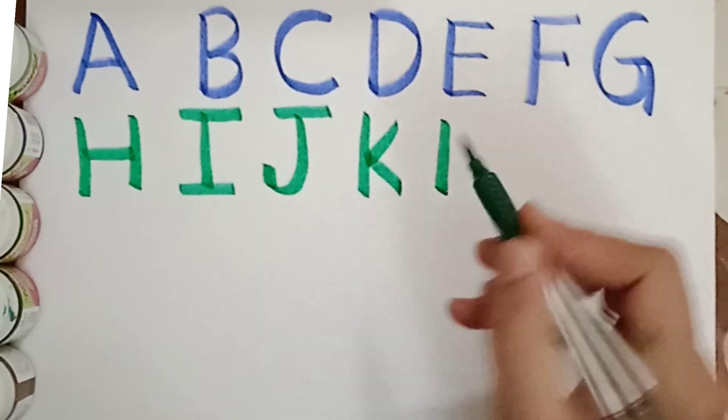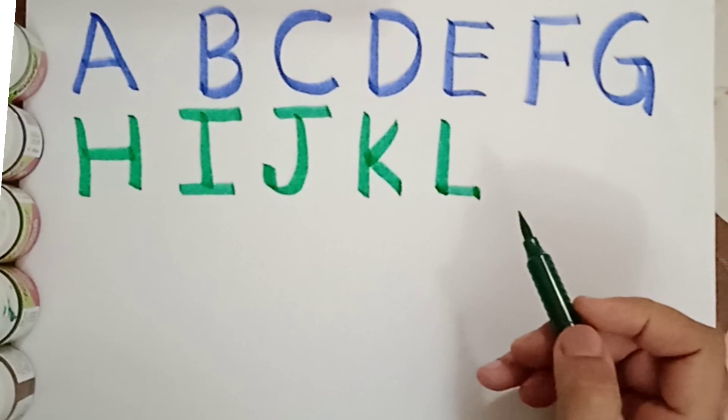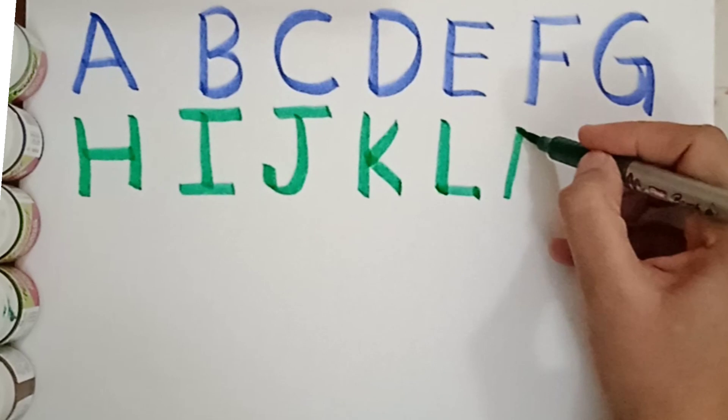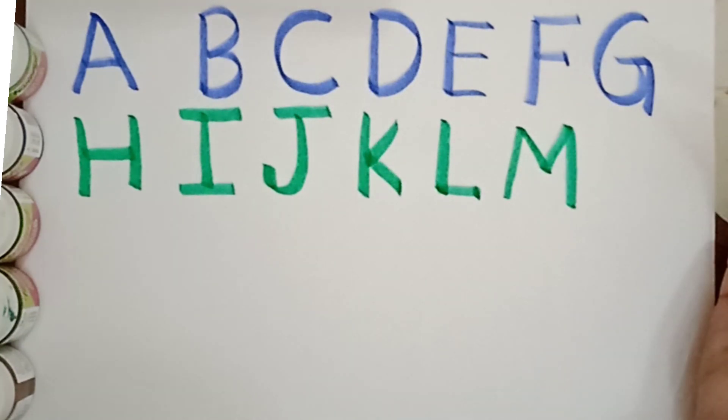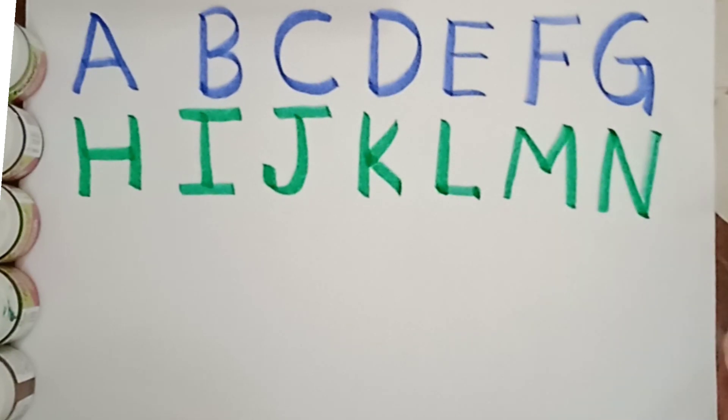Next letter is L. L for lion. L for lion. Next letter is M. M for monkey. M for monkey. And what comes after M? N. N for nose. N for nose.